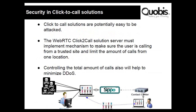If you deploy a click-to-call solution, for example in the website of an online shop where customers can click to contact the contact center, when you are exposing things on the Internet you are opening it to be used by anyone. So you have to control the amount of calls being made, the IPs from which they are made, and many other things. This can be a problem when you offer a click-to-call service.